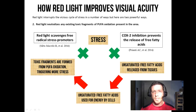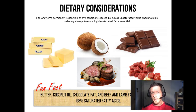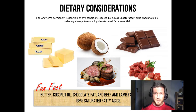However, if you want that to be permanent, there are dietary changes you must make to the fats you consume. For long-term permanent resolution of eye conditions caused by excess unsaturated tissue phospholipids, a dietary change to more highly saturated fat is essential. These fats include butter, coconut oil, chocolate fat, and beef and lamb fat, which contain about 98% saturated fatty acids and very little PUFA. Switching any liquid oils in your kitchen for these fats means eating a diet with far more saturated fat than unsaturated fat, which will help your body detoxify the PUFA and allow your eyes and all cells to function more effectively.